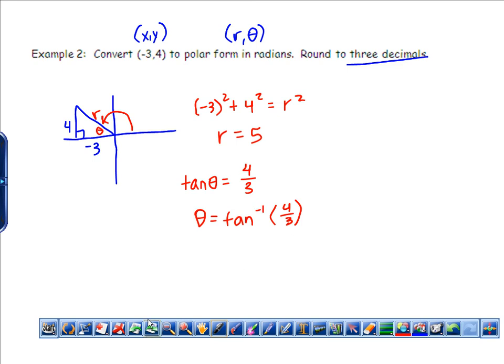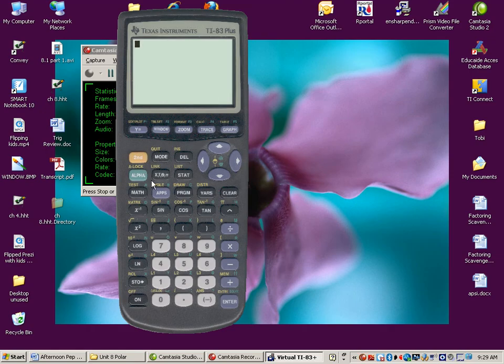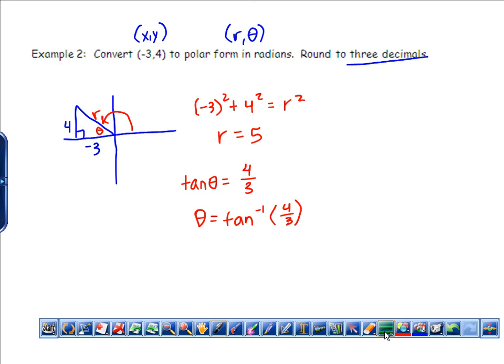So arctangent of 4/3. This is not something you have memorized. This is something you're going to need to use your calculator for. And I am, let me just check. Yep, I'm in radians mode. So I'm going to do arctan of 4/3. This is just going to give me the reference angle. That is the angle in the first quadrant. How do you put an angle like that in the second quadrant? So I have 0.927 here. Now this is π right here. So we want to do π minus that reference angle. And that will just change depending on what quadrant you're in. Don't try to memorize this stuff. Just think through it.